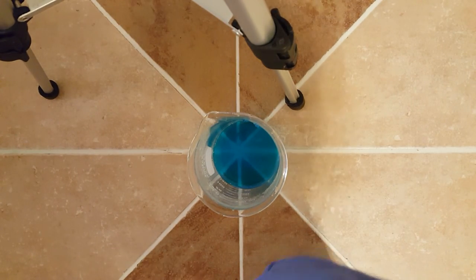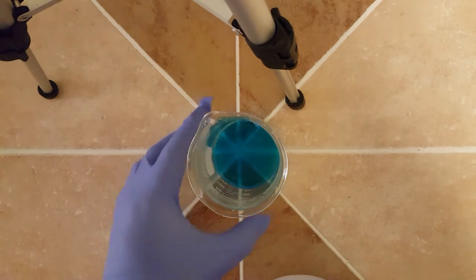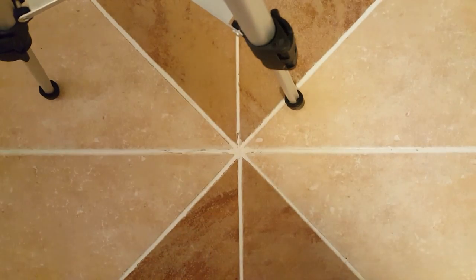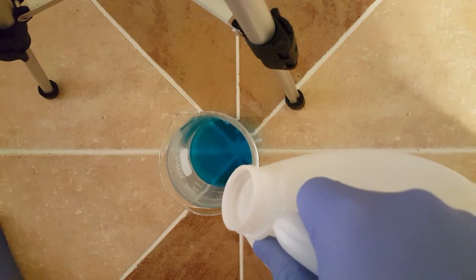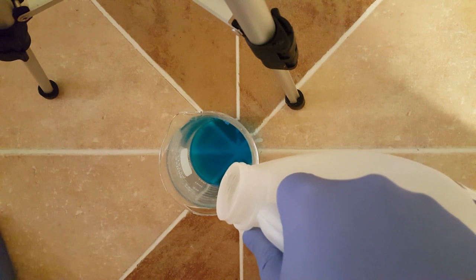Right here I have a beaker filled with copper sulfate in water, and to it I will add some Walmart brand cleaning ammonia. When I add it, you will see an immediate precipitate form.